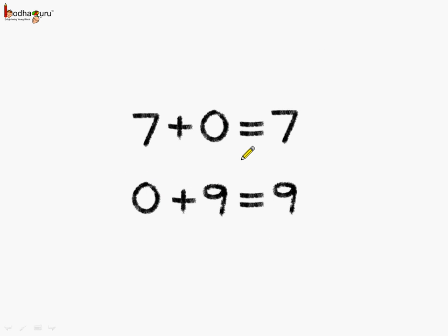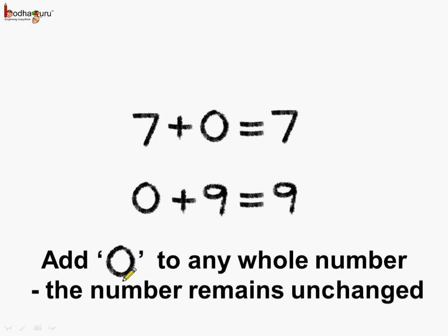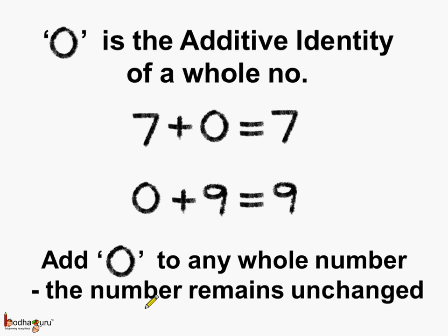Seven plus zero is equal to seven; zero plus nine is equal to nine. This shows that adding zero to any whole number leaves the number unchanged — the identity of the number is not changed. Hence, zero is called the additive identity of a whole number, because the whole number doesn't get changed when zero is added to it.